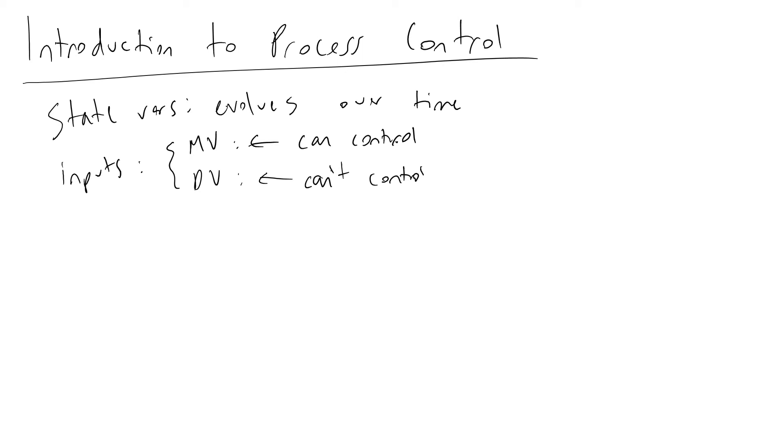The other important definition is outputs. Outputs are a subset of your state variables, but the main difference is they are measurable state variables exiting your system.